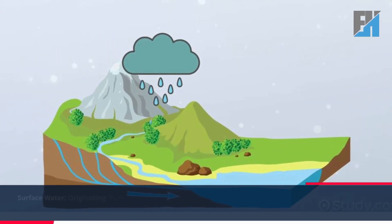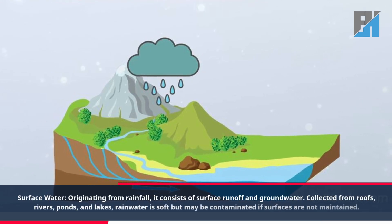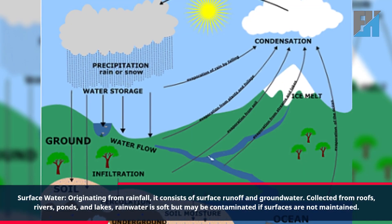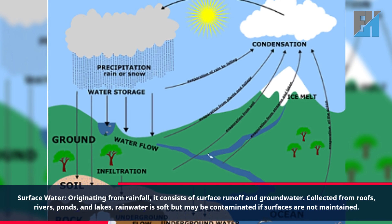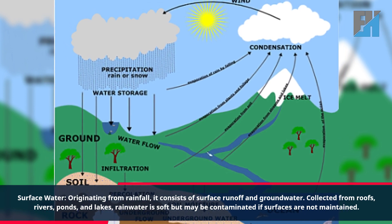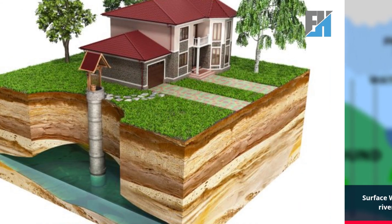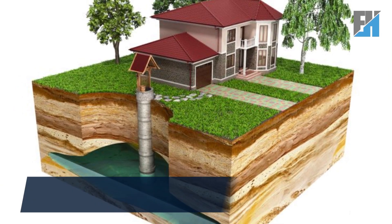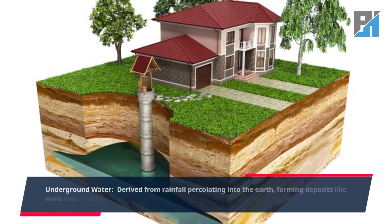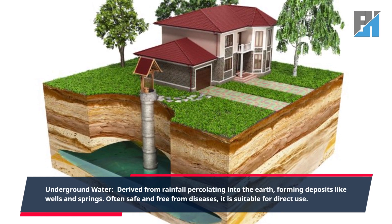Surface water consists of surface runoff and groundwater collected from roofs, rivers, ponds, and lakes. Rainwater is soft but may be contaminated if surfaces are not maintained. Underground water is derived from rainfall percolating into the earth, forming deposits like wells and springs.